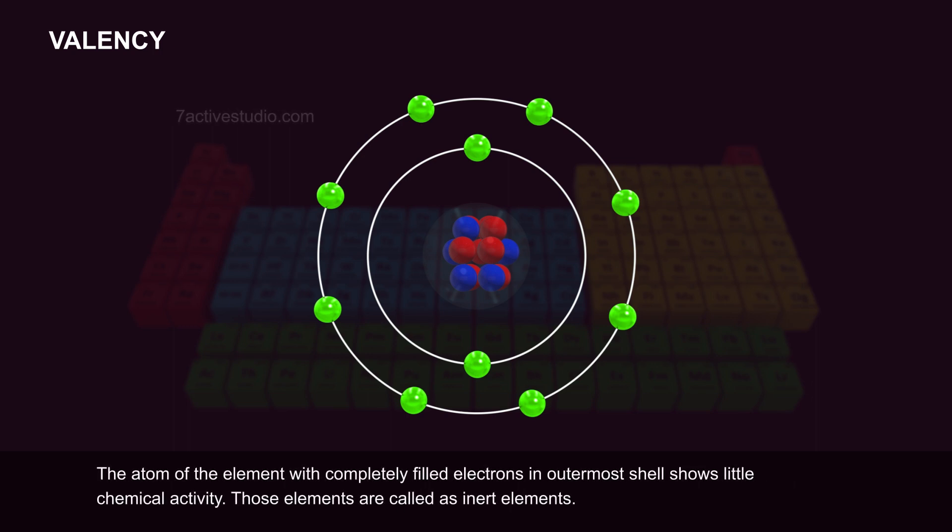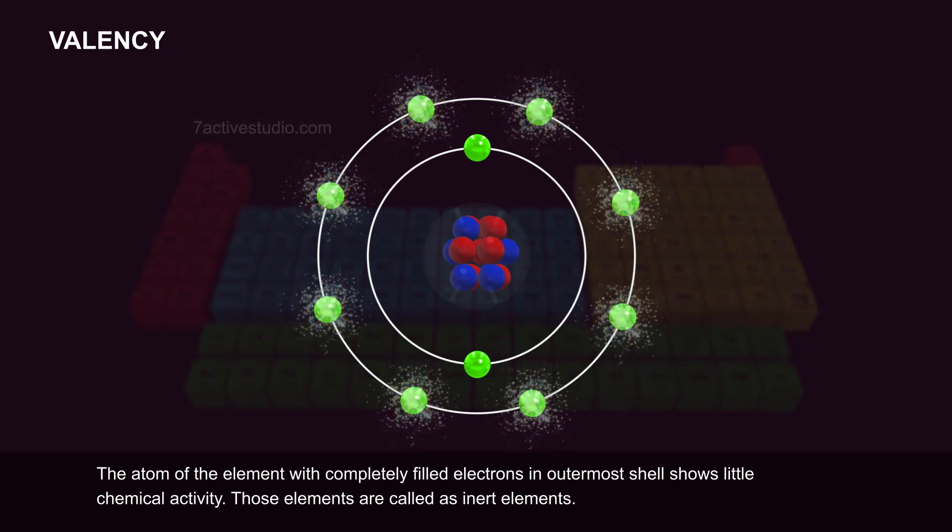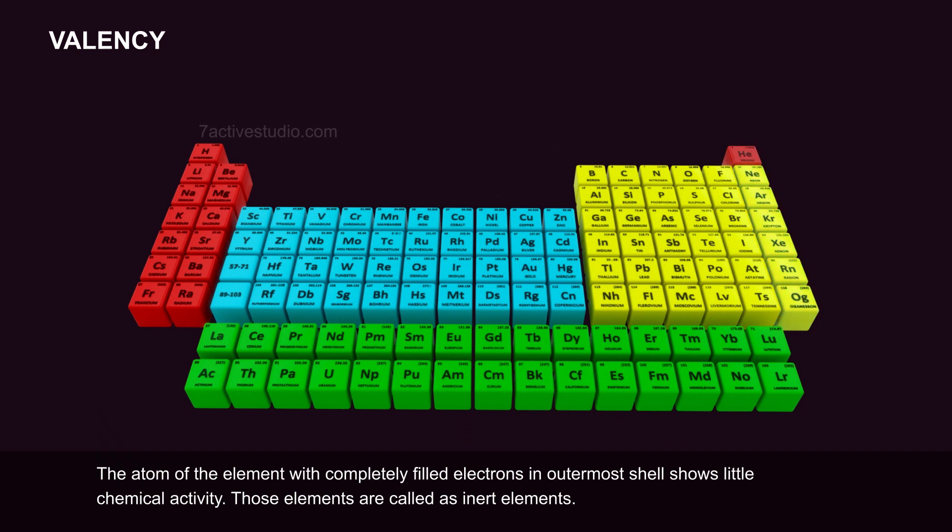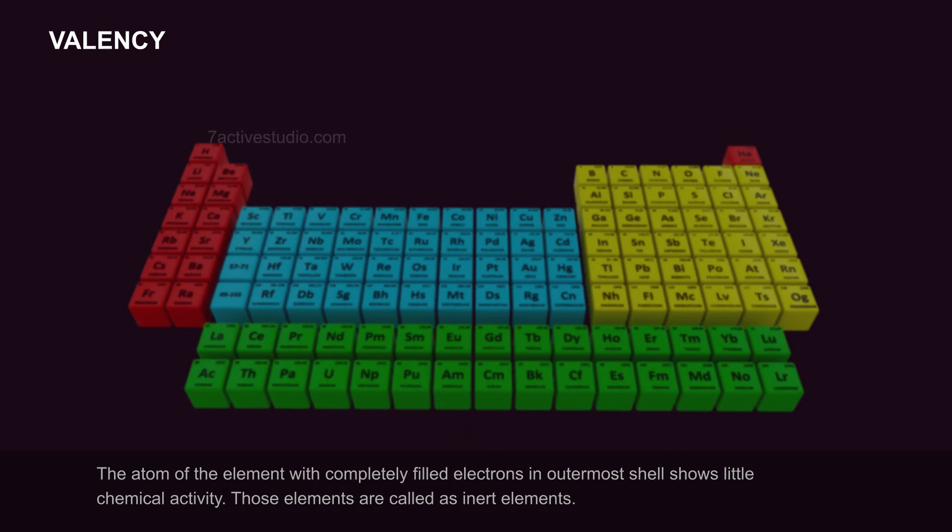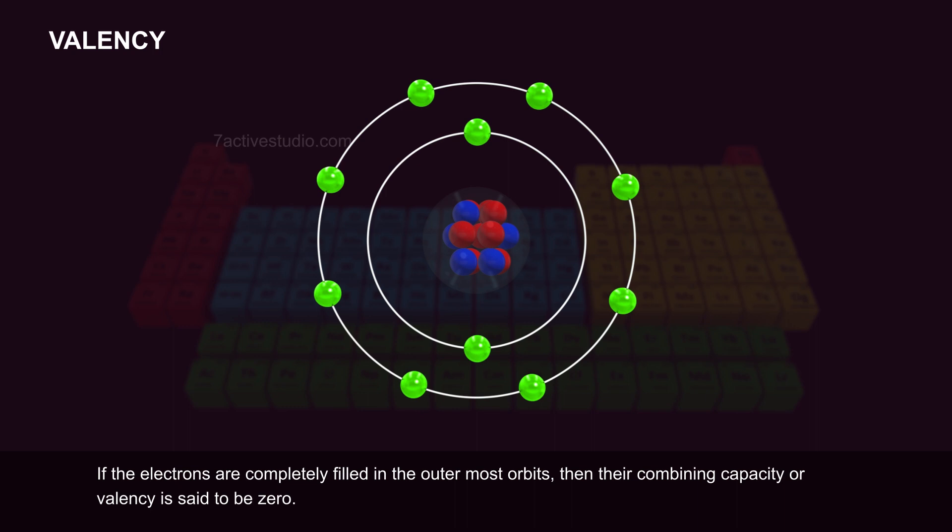The atom of an element with completely filled electrons in the outermost shell shows little chemical activity. Those elements are called inert elements. If the electrons are completely filled in the outermost orbits, then their combining capacity or valency is said to be zero.